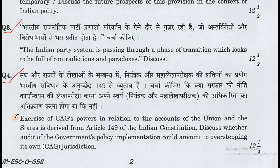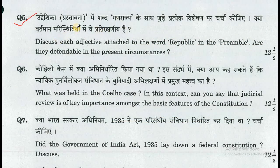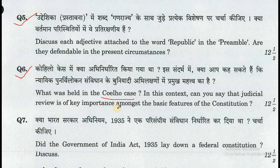Question number 4: Exercise of CAG's power in relation to the accounts of the Union and the States is derived from Article 149 of the Indian Constitution. Discuss whether audit of the government's policy implementation could amount to overstepping its own CAG jurisdiction. Question number 5: Discuss each adjective attached to the word 'Republic' in the Preamble — are they defendable in the present circumstances? Question number 6: What was held in the Coelho case? In this context, you can say that judicial review is of key importance among the basic features of the Constitution.